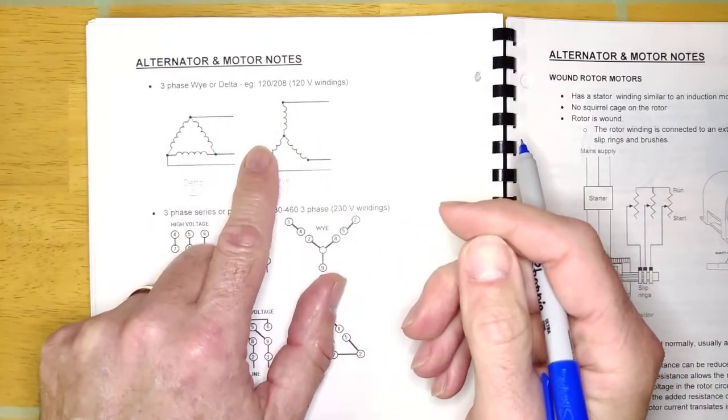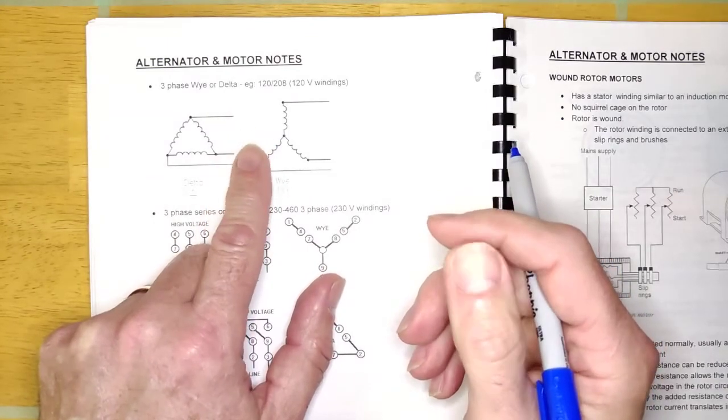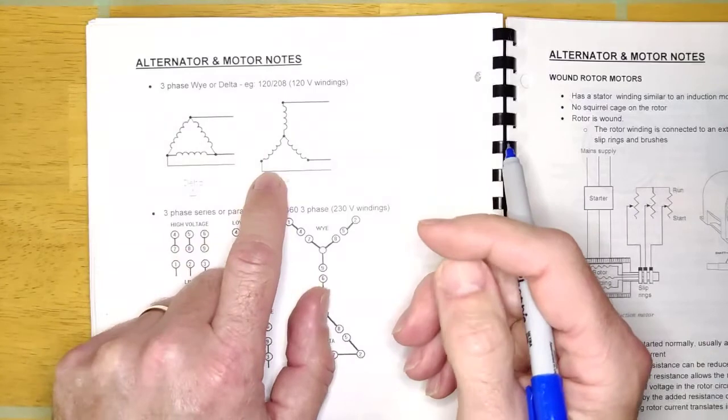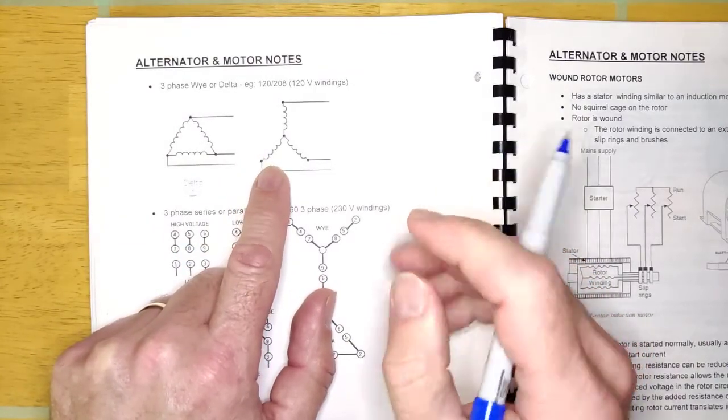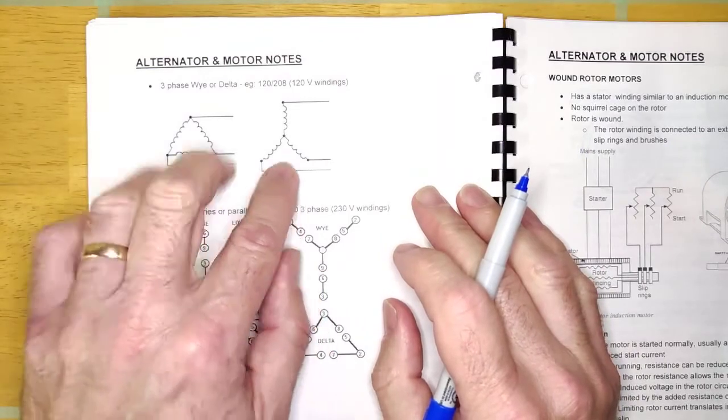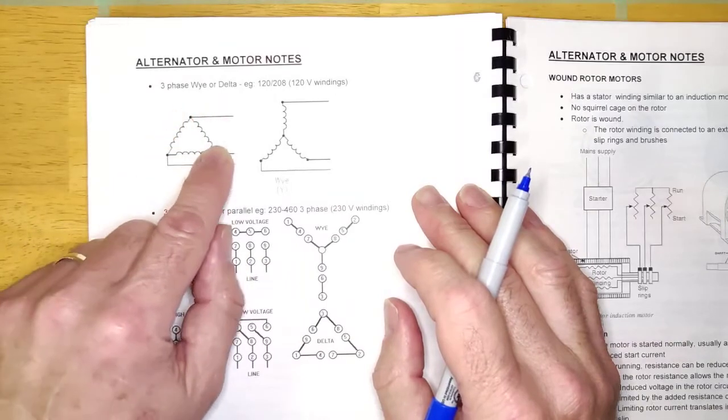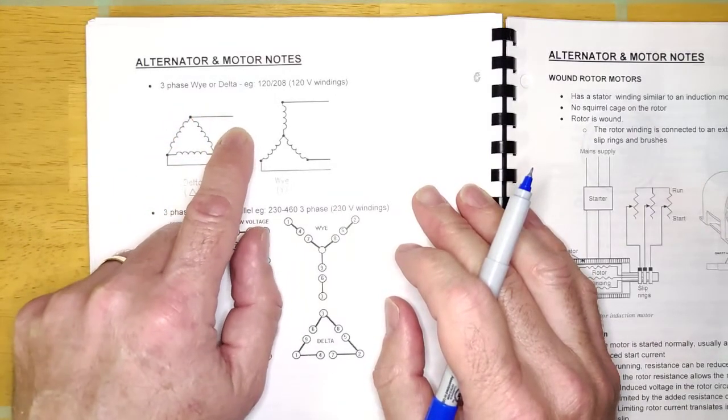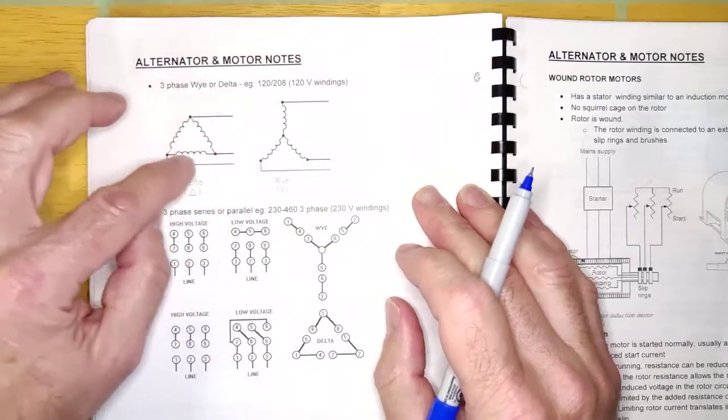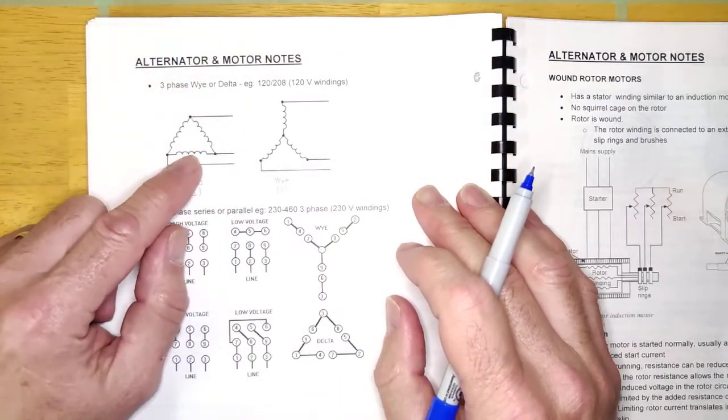So this is a 120 208-volt motor, and you're changing the voltage by changing the winding configuration. Now, I just want to say about this that this is never done or very rarely as far as I know. But it is done for the purpose of low reduced current starting. So if you have a Y delta-connected motor, so let's say this was a 600-volt motor, and you would have 600 volts here.